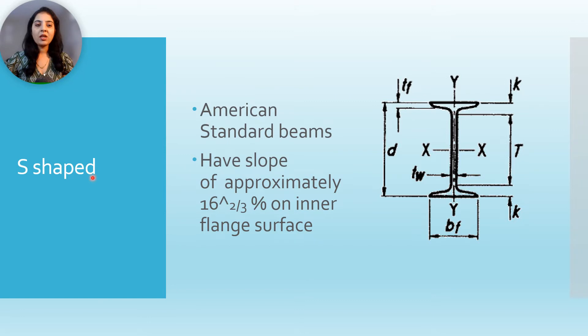S shape, that is American standard beams. They have slope of approximately 16 to the power 2/3 percentage on inner flange surface. So this is the slope.